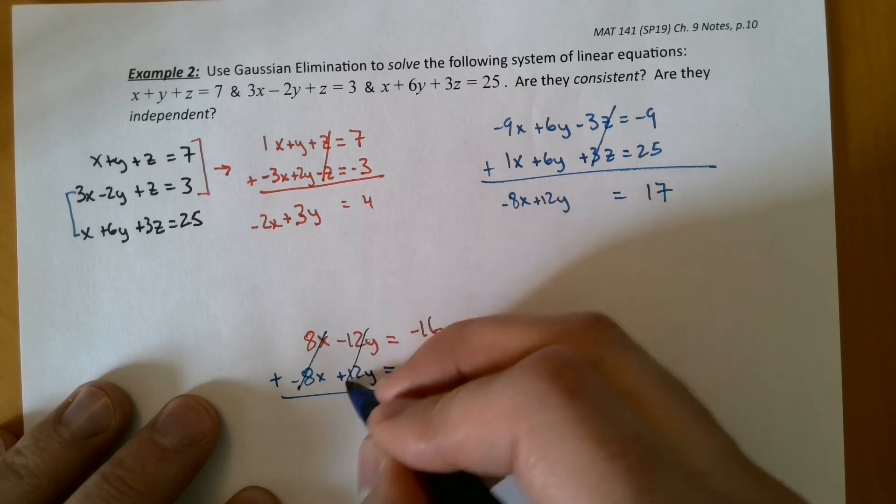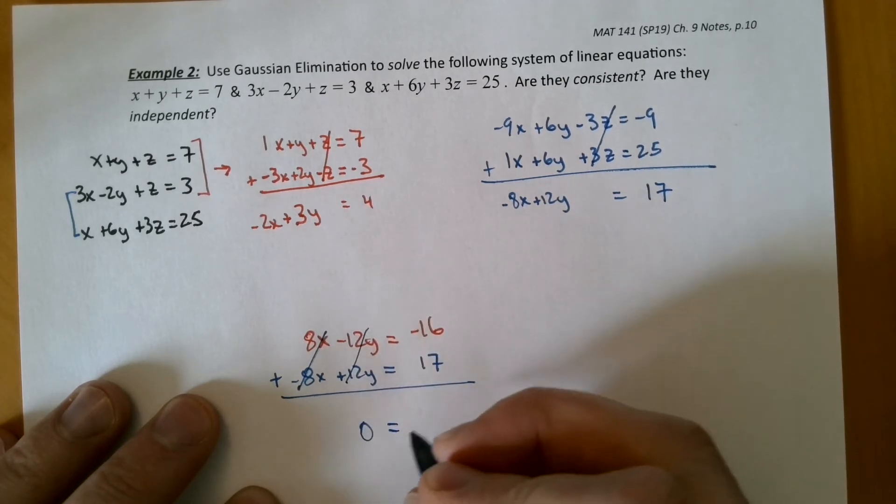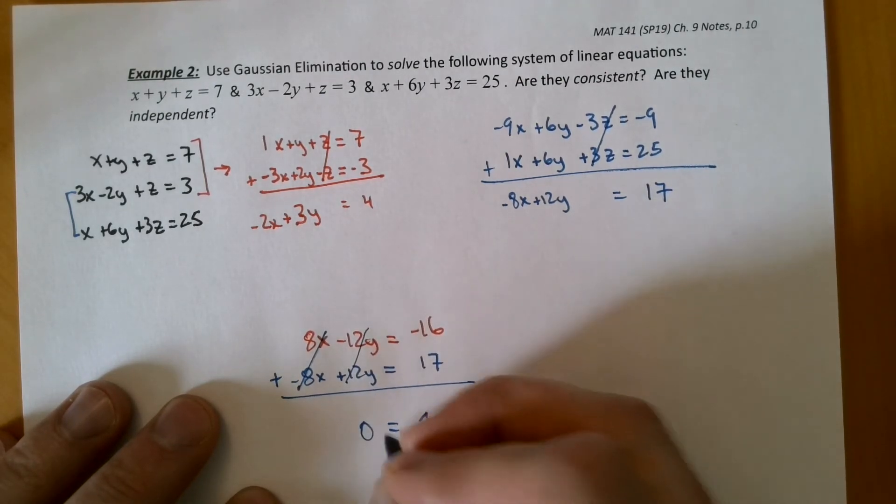Ooh, look what happens. 0, 0. We get 0 equals 1, which is certainly not true.